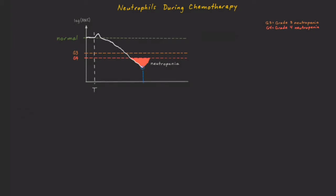The lowest point here in the cycle is called the nadir. After a few more days, the chemotherapy gets cleared out and the neutrophil counts back towards normal. Ideally, they would get all the way back to normal before the next round.